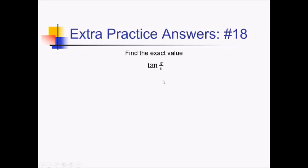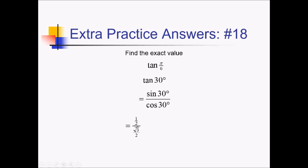On this one, we're trying to figure out tan of pi over 6. As degrees, this is really just tan of 30 degrees. We're going to turn this into sine over cosine: sine of 30 is 1/2, and cosine of 30 is radical 3 over 2. If we cancel out the denominators of 2, this is really 1 over root 3. Multiplying by root 3 over itself to rationalize the denominator, this is going to be root 3 over 3.